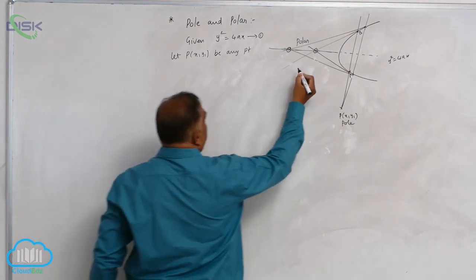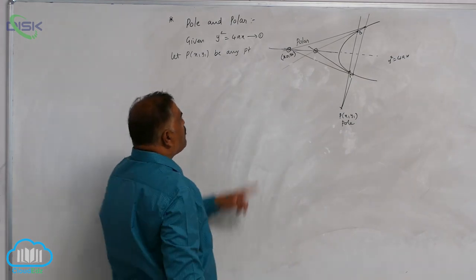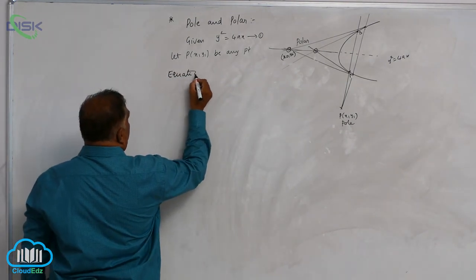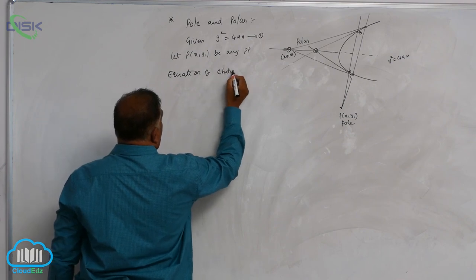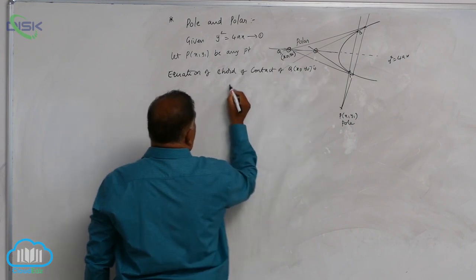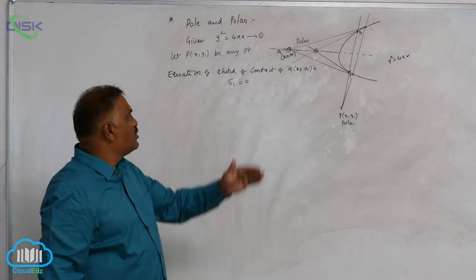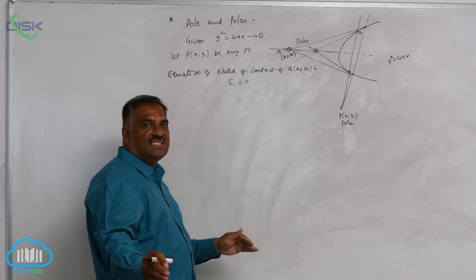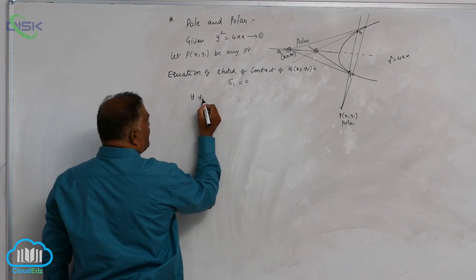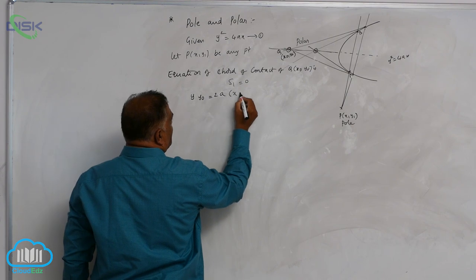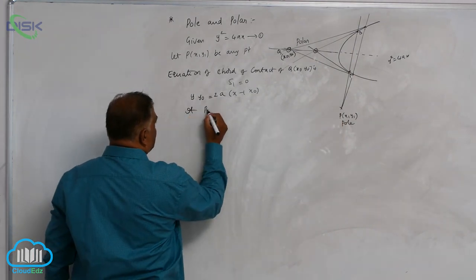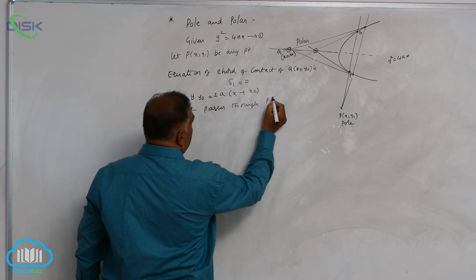Now assume a particular point Q(x₀, y₀) on the chord. For Q(x₀, y₀), this will become the chord of contact. The equation of chord of contact of point Q(x₀, y₀) is S₁ = 0, which gives y·y₀ = 2a(x + x₀). This chord of contact always passes through the point P(x₁, y₁).